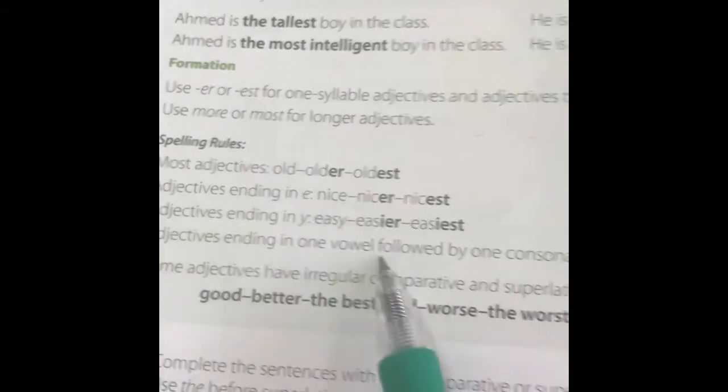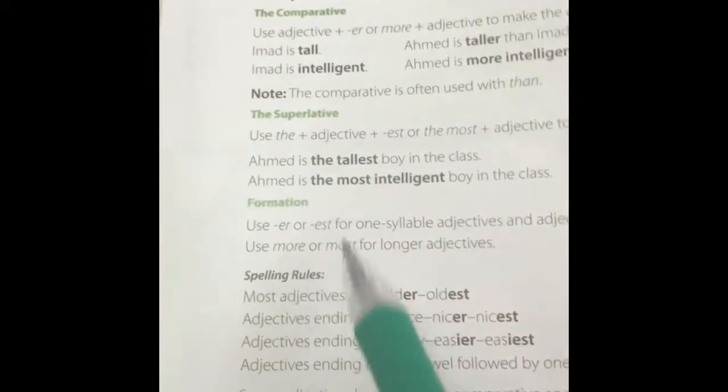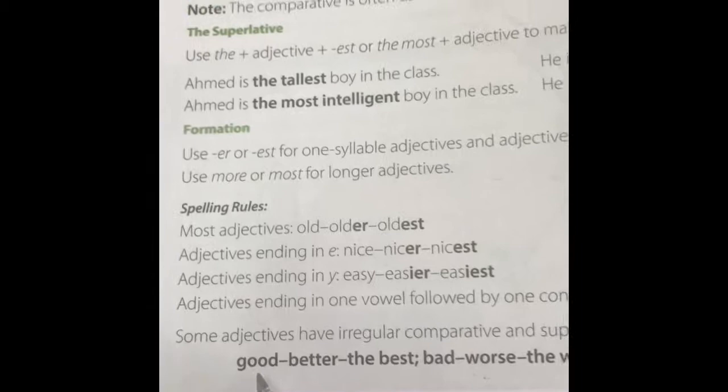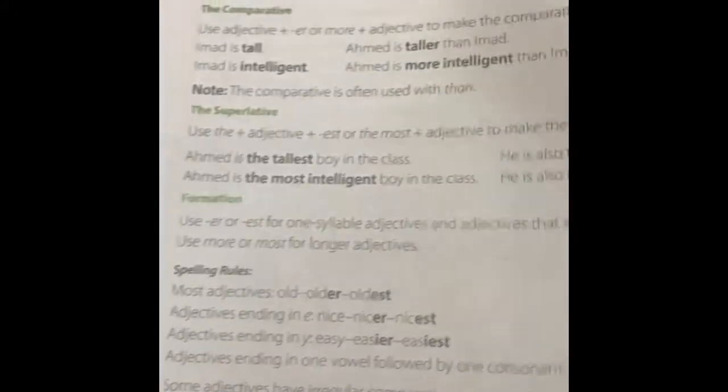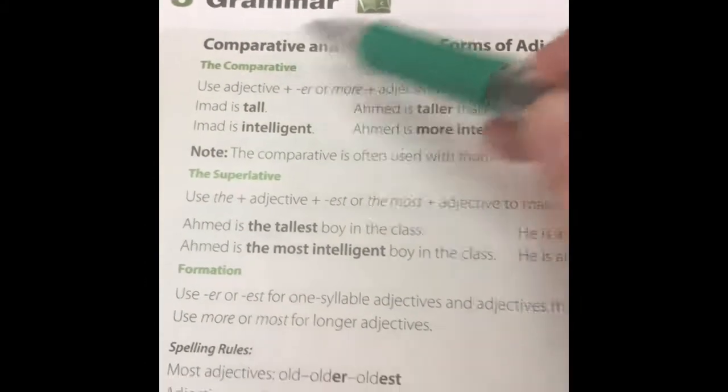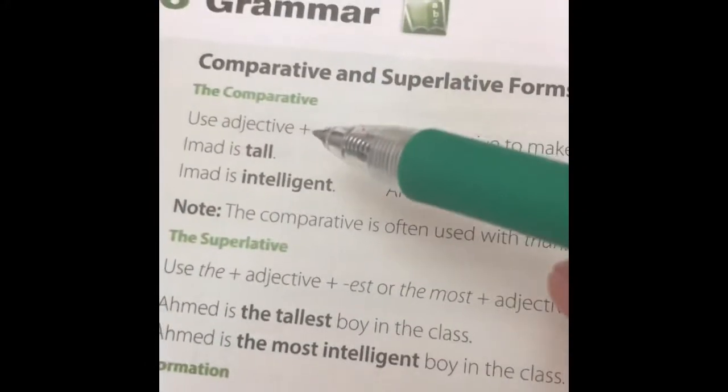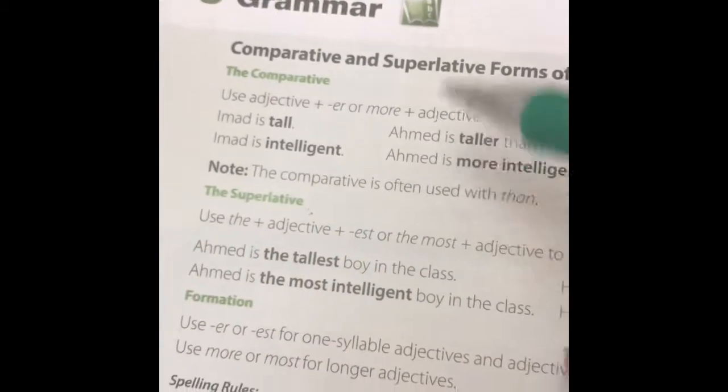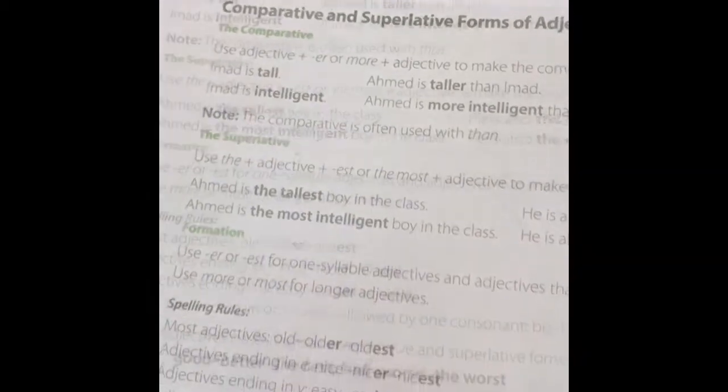Spelling rules about how to add er to the words. In comparative and in the superlative, we have good and bad. These are irregular. For good, in comparative it becomes better than, and in the superlative it becomes the best. For bad, in comparative it becomes worse than, and in superlative it becomes the worst. So better, worse, and the best, the worst.